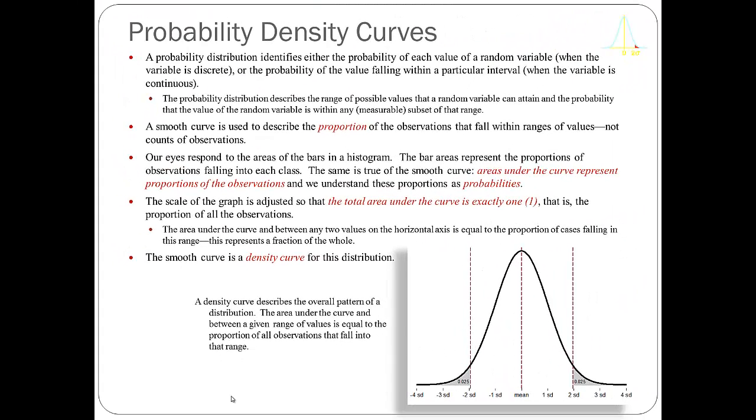A probability density curve is a theoretical distribution. We use a smooth curve to describe the proportion of observations that fall within particular ranges of values. When we talk about proportions in this context, they're equal to probabilities.